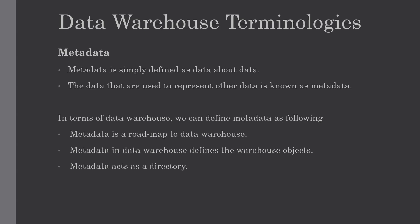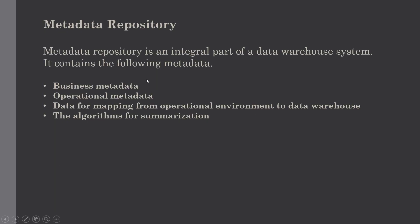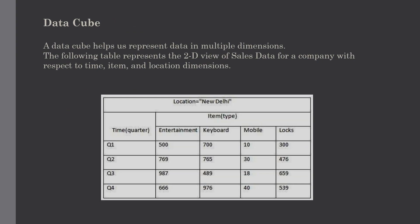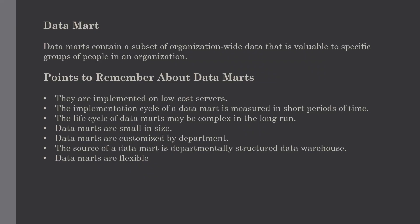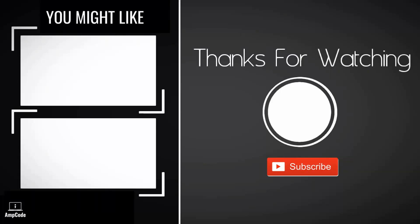In this tutorial we have seen the basic terms involved in data warehousing: metadata, metadata repository, data cube and why it is useful over a 2D representation, the 3D data cube derived from the 3D table with a simple example, and data mart and why it is useful in an organization to divide and analyze data more efficiently. If you like this video please subscribe to my channel and ring the notification bell to get the latest updates. Thanks for watching.